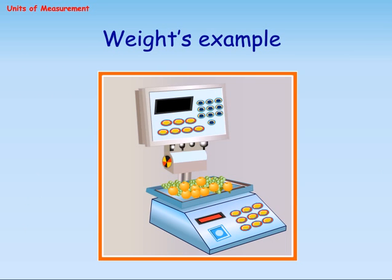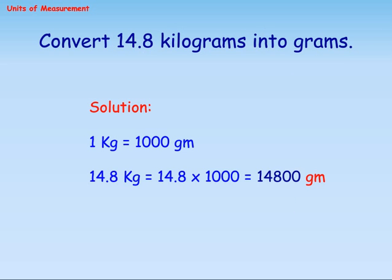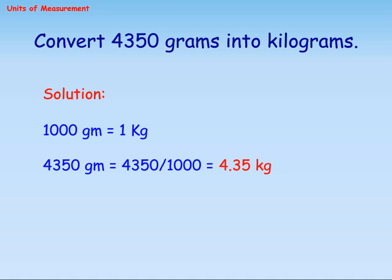Weights Example: Convert 14.8 kg into grams. Solution: 1 kg equals 1,000 g. Therefore 4,350 grams equals 4,350 over 1,000 equals 4.35 kilograms.